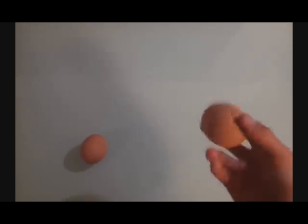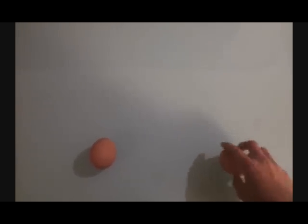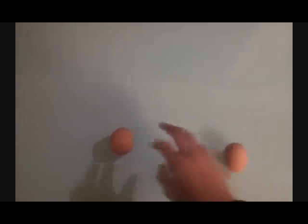The raw egg should spin by itself after it has been stopped, while the boiled egg should just stop. We will discuss this after you have seen the experiment.